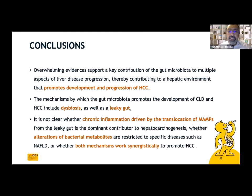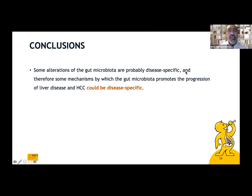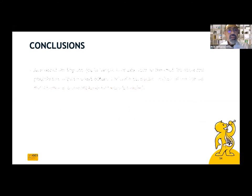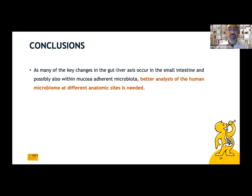It is not clear whether chronic inflammation driven by translocation of MAMPs from the leaky gut is the dominant contributor to hepatocarcinogenesis, whether alterations of bacterial metabolites are restricted to specific diseases, or whether both mechanisms work synergistically for HCC. Some alterations of the gut microbiota are probably disease-specific, and therefore some mechanisms by which gut microbiota promotes liver disease and HCC progression could also be disease-specific. Better analysis of the human microbiome at different anatomic sites — including small intestine and mucosa-adherent microbiota — is needed.